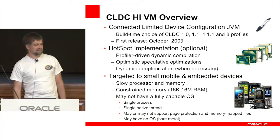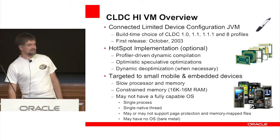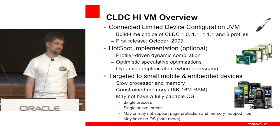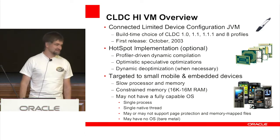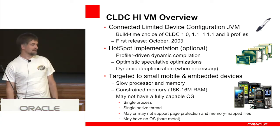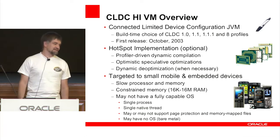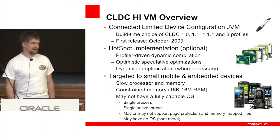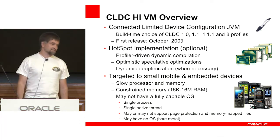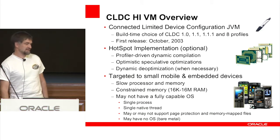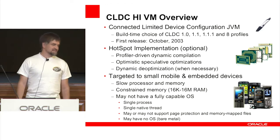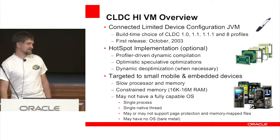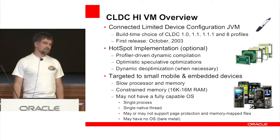We target small mobile and embedded devices. Originally it was targeted at dumb mobile phones, and once they became extinct we found controllers. So now we live mostly in controllers. All these devices have slow processors and slow memory. Memory is constrained, starting with 16K, and our range ends around 16MB of RAM. These devices may or may not have an OS, and if they do, it's rarely a fully capable OS — usually a single process with single or just a few native threads.